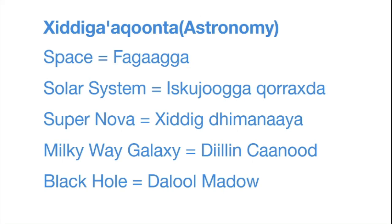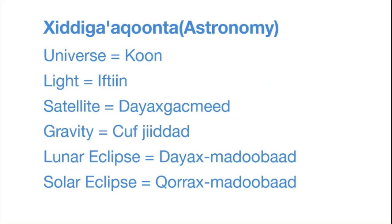Black hole is dhalol-madoh. Universe is kon. Light is iftin. Satellite is dayah-ga'amad. Gravity is earth-jidad. Lunar eclipse is dayah-madobad. And solar eclipse is qurrah-ma'amad-ga'amad.